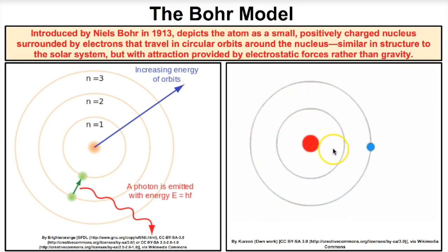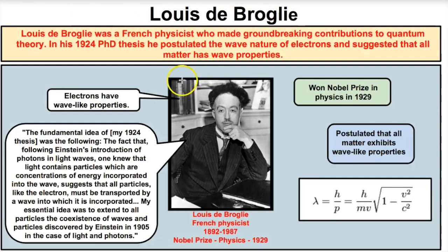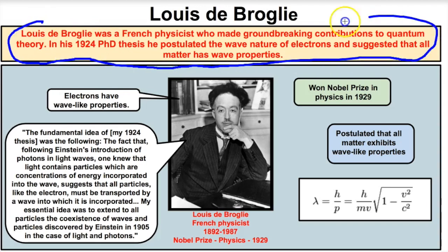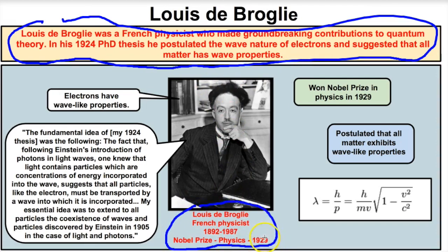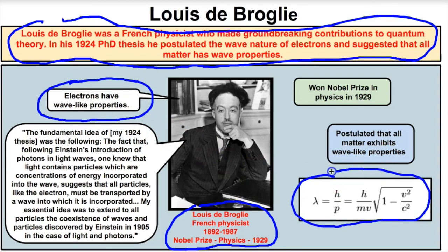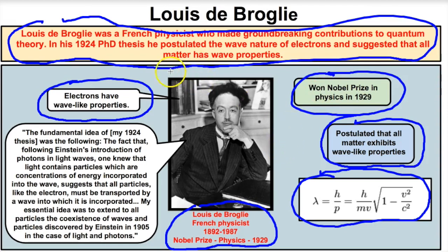Let's continue with Louis de Broglie, a French physicist from the early 1900s. In his 1924 PhD thesis, he postulates the wave nature of electrons and suggests that all matter has wave properties. He wins the Nobel Prize in Physics in 1929 for discovering that electrons have wave-like properties — and comes up with an equation postulating that all matter exhibits wave-like properties.